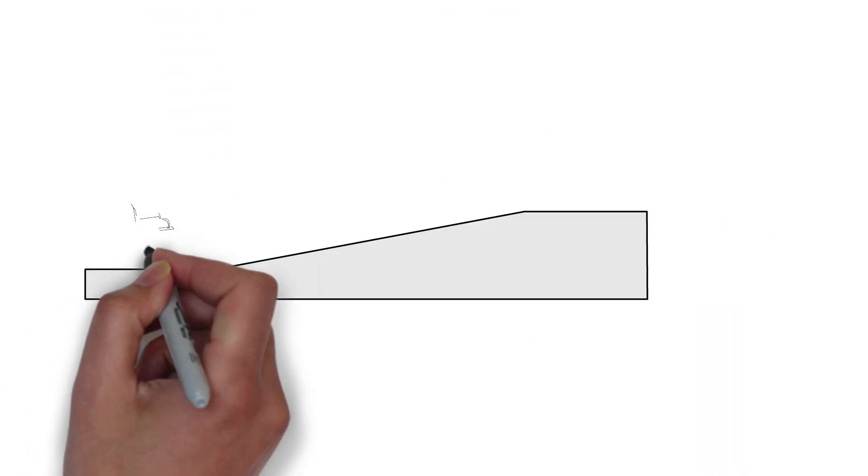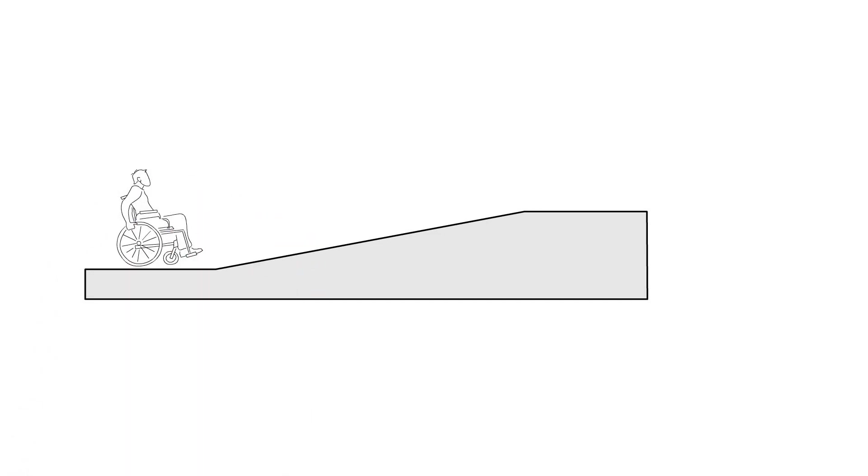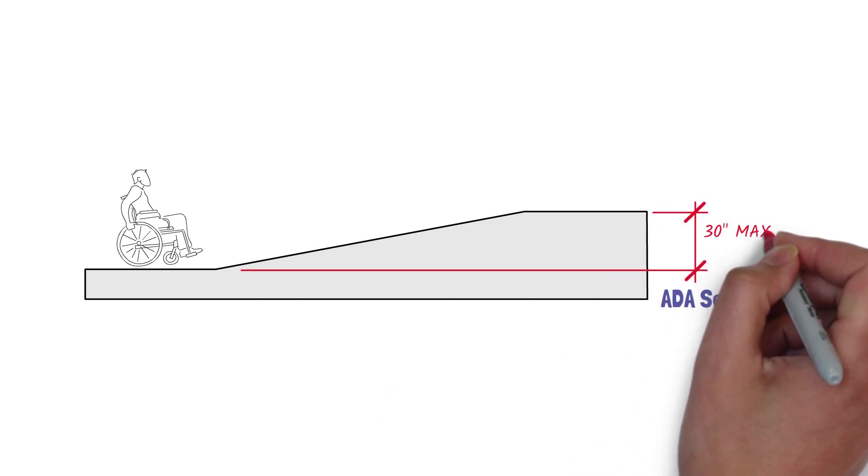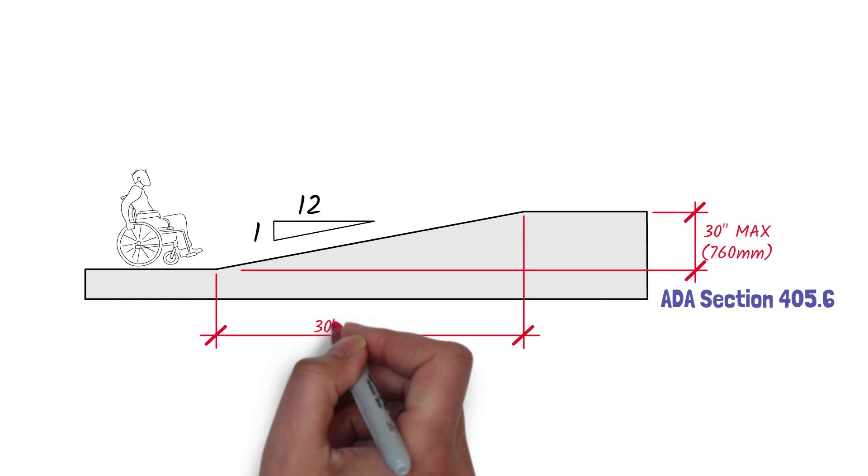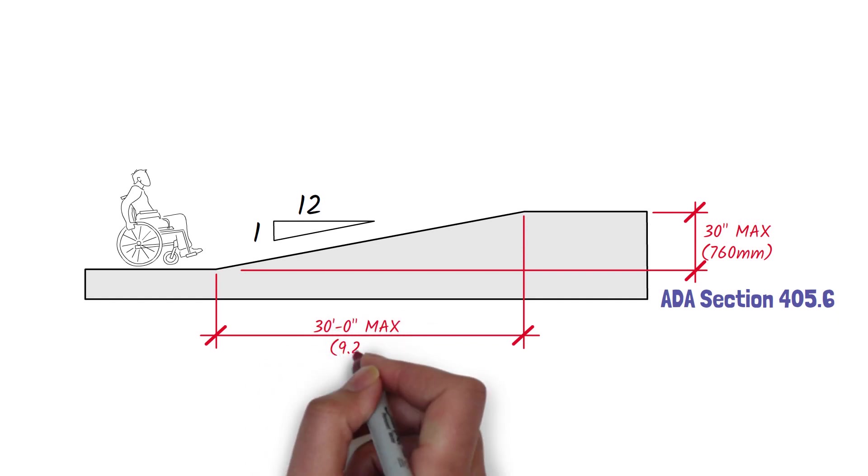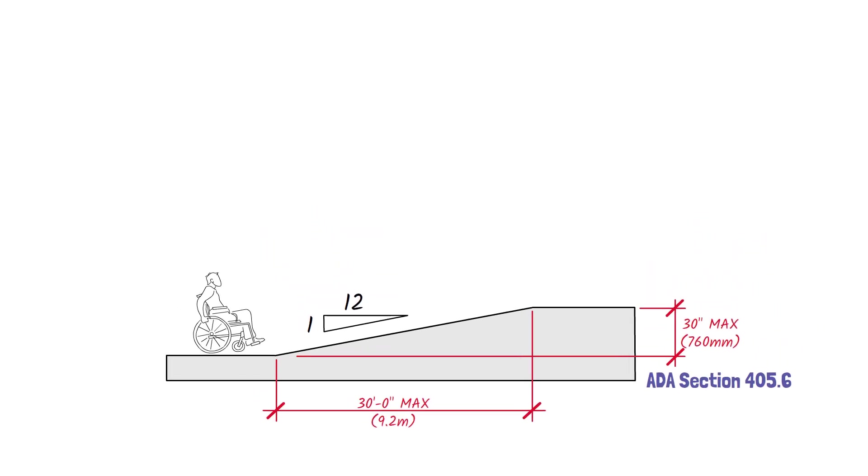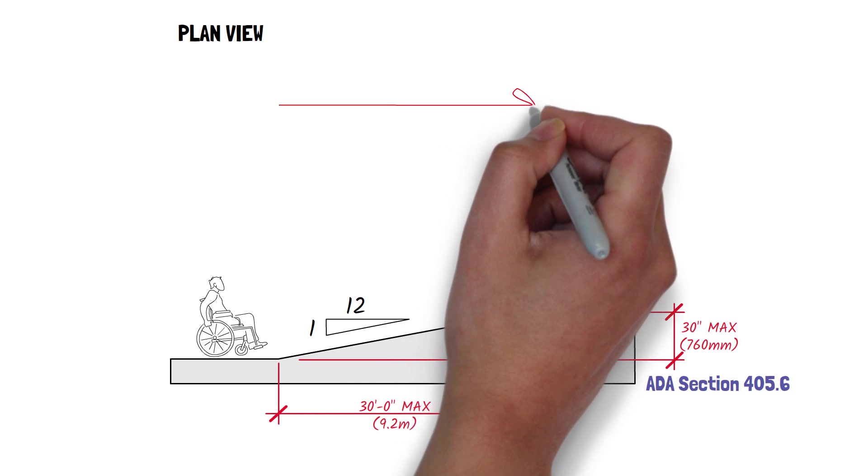Now that takes care of the slopes and widths, but how about the length? Can you make a ramp that is 100 feet long? Well, ADA Section 405.6 states that a ramp can only have a rise of 30 inches maximum. So how does that affect our length? Well, given that the maximum allowable slope for a ramp is 1 inch vertical for every 12 inch horizontal, this tells you that you can only go 30 feet horizontally maximum if you use that 1 in 12 slope. So the answer is no. You cannot make one continuous ramp that has a 1 in 12 slope 50 feet long or 100 feet long. So what happens if you need to ramp up a height that is more than 30 inches in total height? Well, that is when intermediate landings come into play.